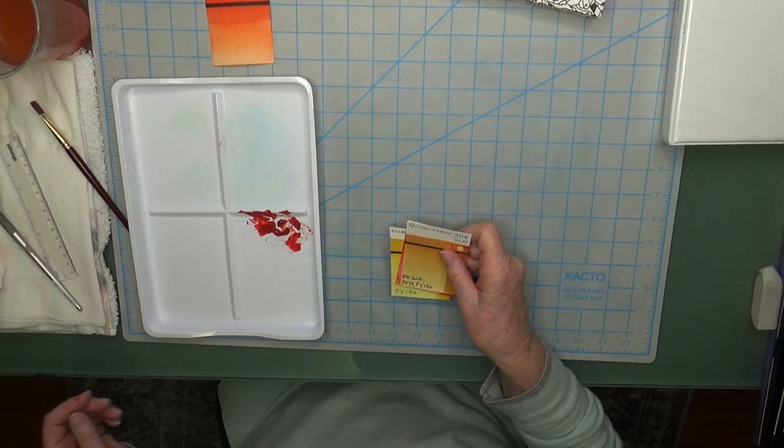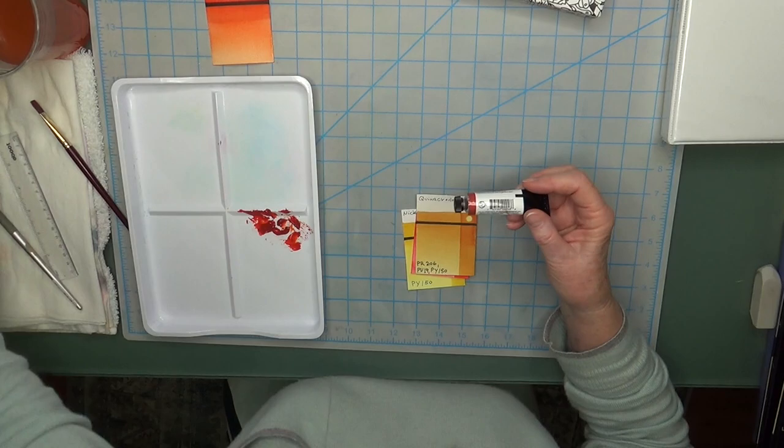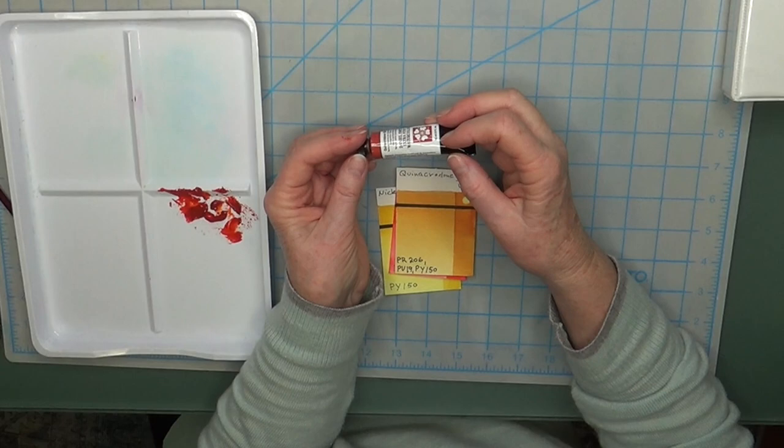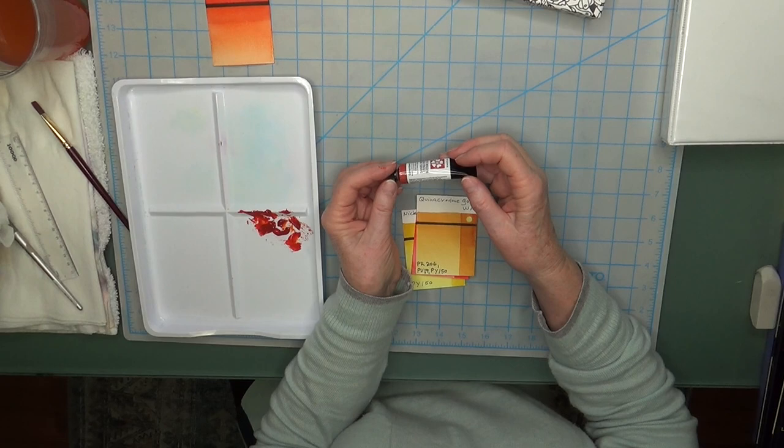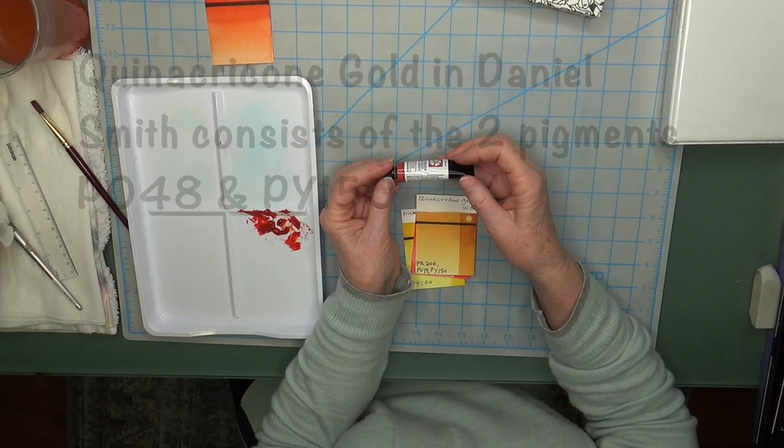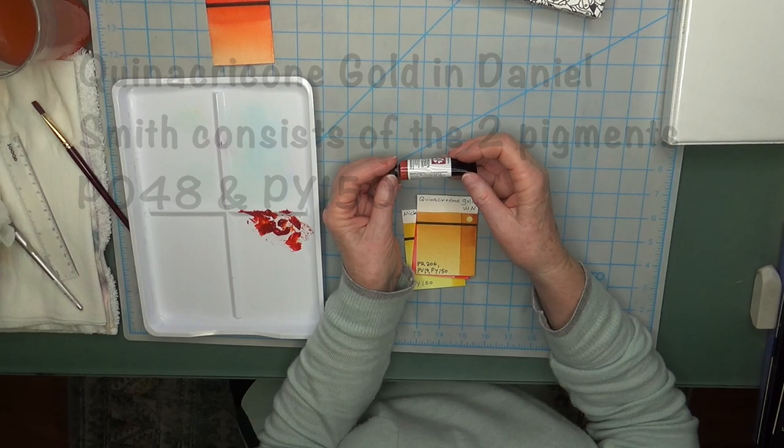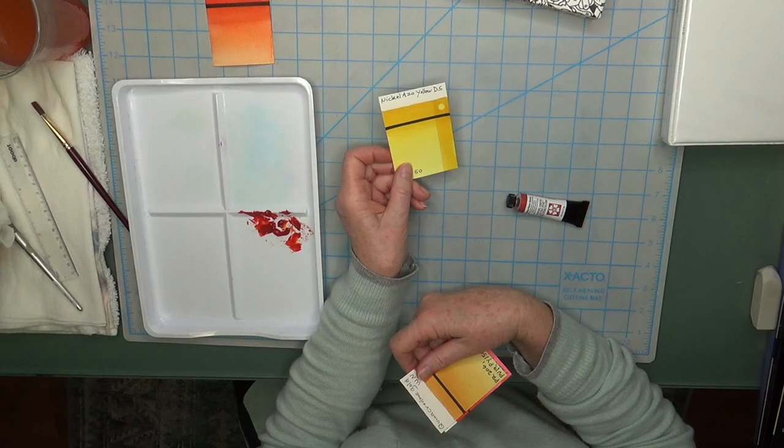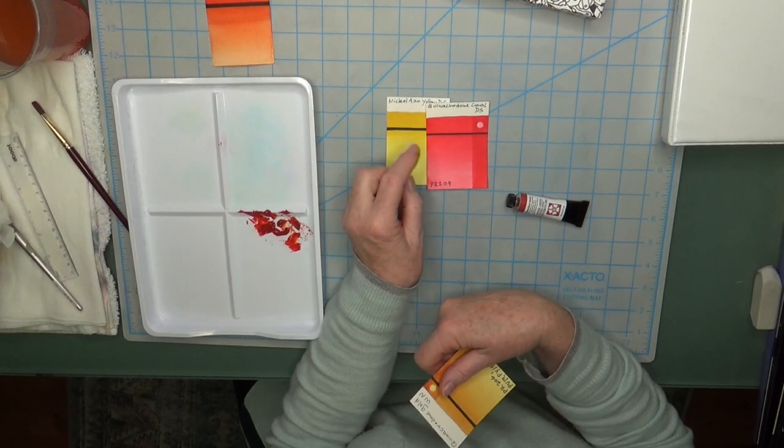What I wanted to tell you is what's in this Quinacridone Sienna. Looking at the pigment information, which I didn't do before I purchased it, it has Quinacridone Coral PR209, so that's Pigment Red 209. It has Quinacridone Gold PO48, that's Pigment Orange 48. And then it has Nickel Azo Yellow, which is Pigment Yellow 150, which is my favorite yellow. I pulled them out of my binder.